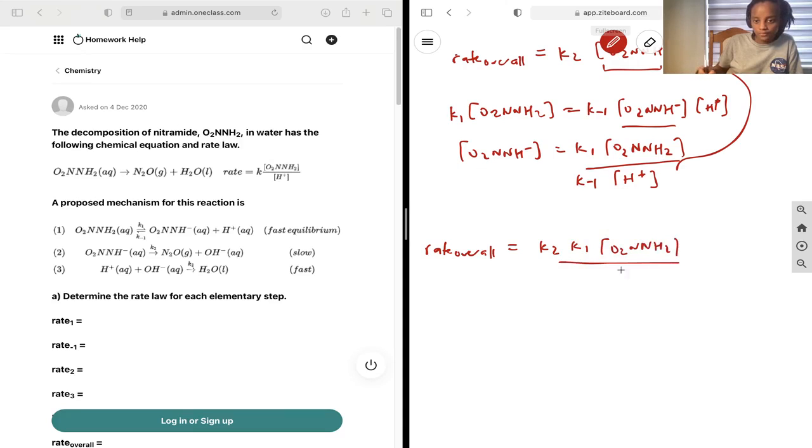And if you decide that k is equal to k2 k1 over k minus 1, then...